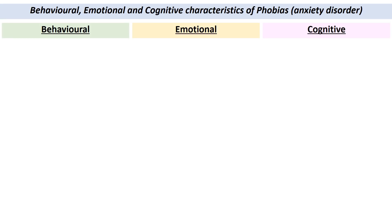We'll start with phobias. You're probably aware of phobias as an extreme irrational fear of some object or situation. The more commonly known ones are arachnophobia, a fear of spiders, or claustrophobia, a fear of enclosed spaces. Here we're going to go a little bit more into depth into characteristics classified as behavioural — what actions the sufferer carries out — emotional, the feelings they have, and cognitive, their thought processes.